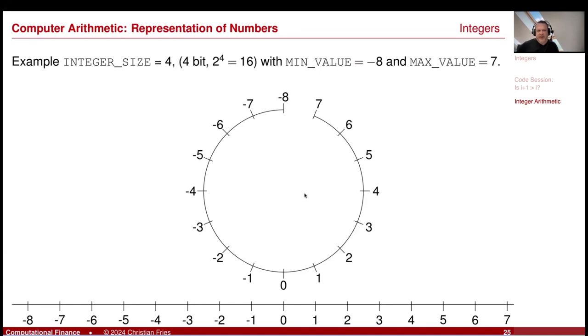This is the example if integer size is 4. So we have 4 bits. 4 bits are 16 numbers. So maybe we choose 8 negative numbers, 7 positive numbers, and the 0. And you see then you have this circle. So for example, if you would add to the 5 here, some number, say 1, 2, 3, 4, 5. So 5 plus 5 equals minus 6. That was a peek into integer arithmetic.